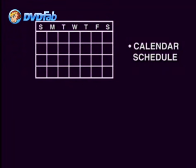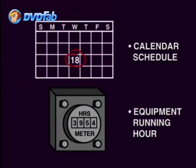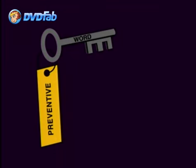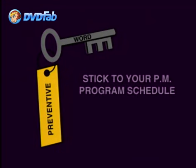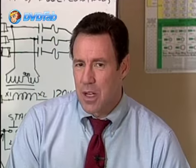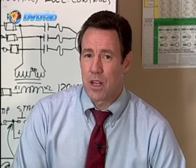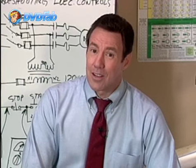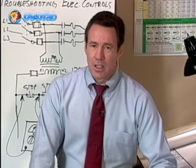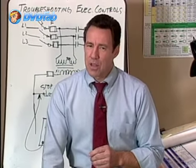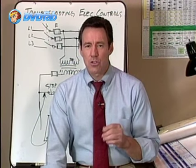Preventive maintenance should be performed based on a calendar schedule or based on the equipment running hours — in fact, it may be based on both and take the worst case when necessary. For instance, perform a preventive maintenance either after 200 hours of operation of a particular motor or every 30 days, whichever comes first. Don't forget that the most important key word is prevention — stick to your program. You don't want to overdo it because this will keep the equipment down at unnecessary times when it should be producing goods.